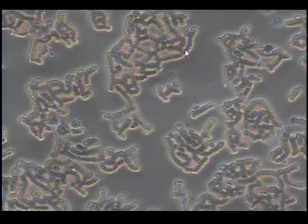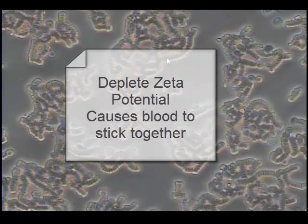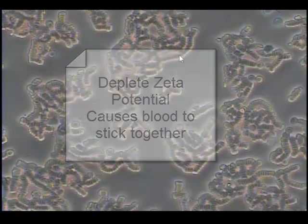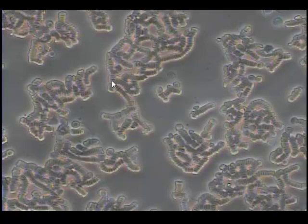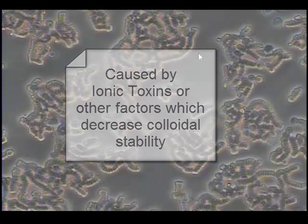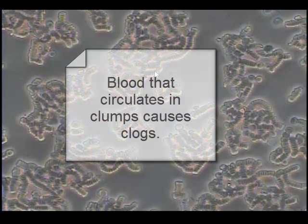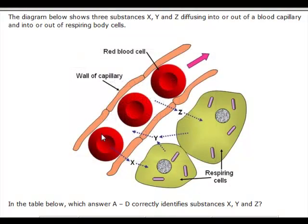Similarly, this image shows blood that is stuck together like rolls of coins. This formation is called Rouleau and indicates clearly that the blood in the serum lacks the electrostatic potential to repel each other. Blood traveling or circulating in this formation obviously lacks the ability to traverse capillaries, which are approximately the same width or diameter as a red blood cell.